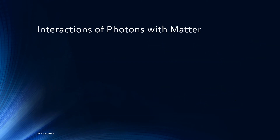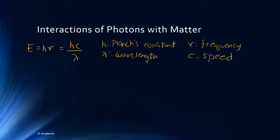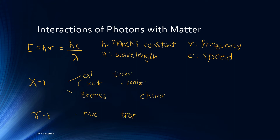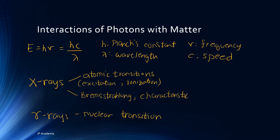Let us now talk about photon interaction. Photons include electromagnetic radiation such as X-rays and gamma rays. The relationship between the energy of a photon, its wavelength and frequency is shown here: E equals h-nu, or equivalently h-c over lambda. X-rays are generally generated by atomic transitions that include excitation and ionization — we can have Bremsstrahlung X-rays with a continuous energy spectrum and characteristic X-rays with specific energy values. Gamma rays are produced due to nuclear transition. Thus, the main difference between X-rays and gamma rays is the point of origin.